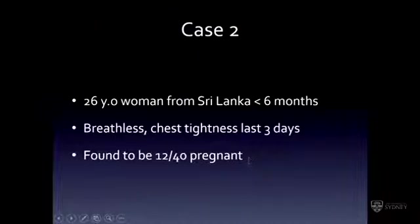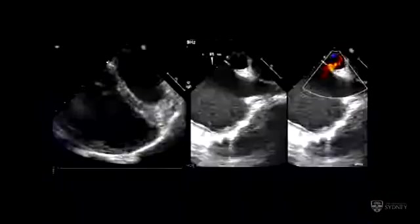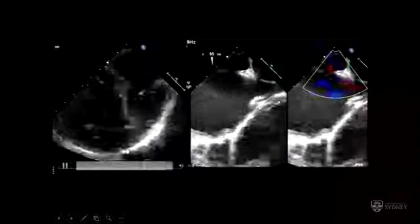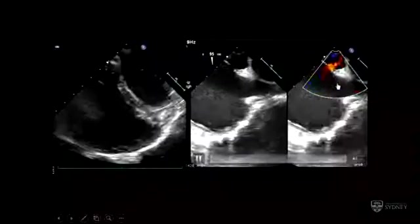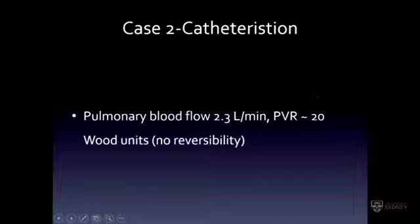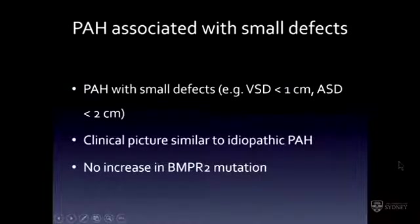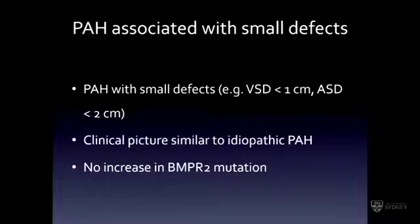The second case is a 26-year-old woman who moved to Australia, presenting very unwell with heart failure and found to be 12 weeks pregnant. She has a pressure-loaded, hypocontractile right ventricle with a small high secundum atrial septal defect — too small to cause Eisenmenger syndrome — but with predominantly right-to-left shunting. Cardiac catheterization showed poor cardiac output and very high pulmonary vascular resistance. These patients have defects too small to expect Eisenmenger syndrome; their clinical picture more resembles idiopathic pulmonary hypertension, and they haven't been found to carry the genetic abnormalities seen in familial PH. One must suspect a second insult to the pulmonary vasculature.